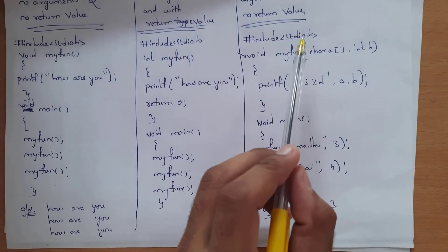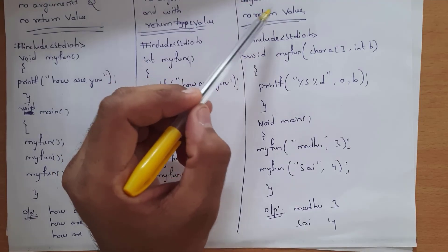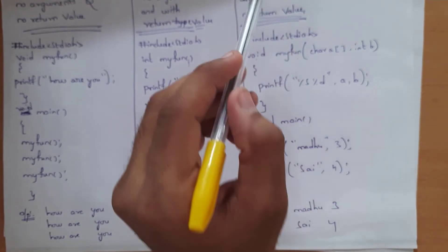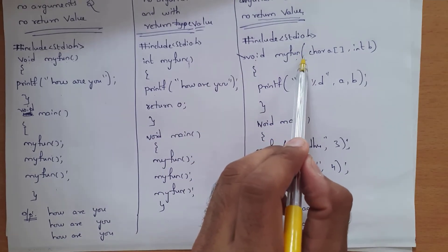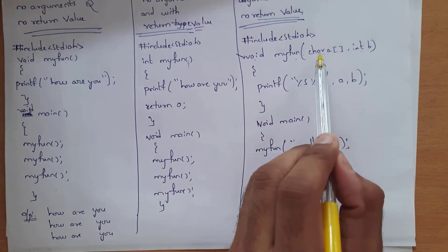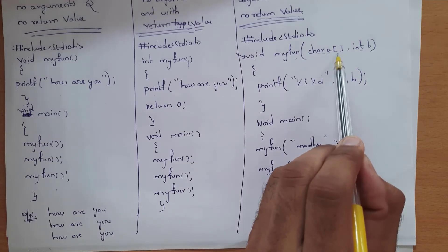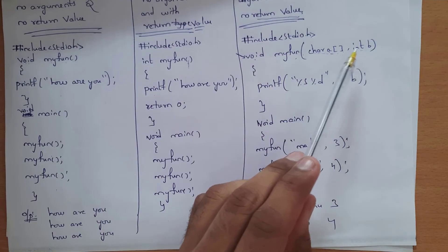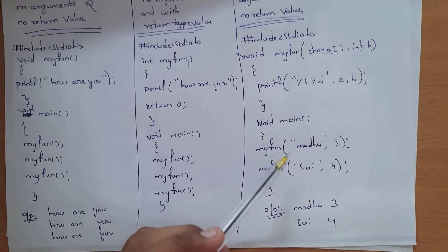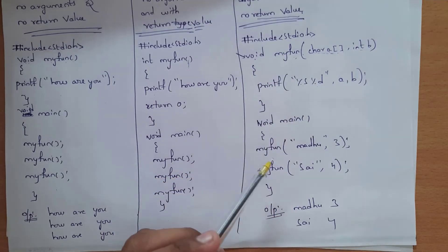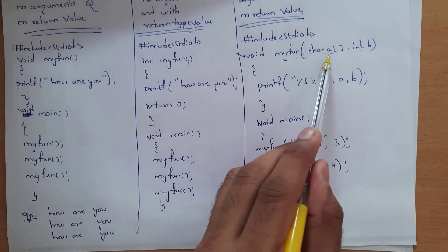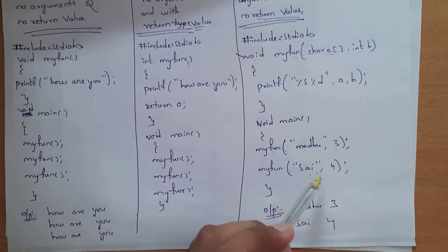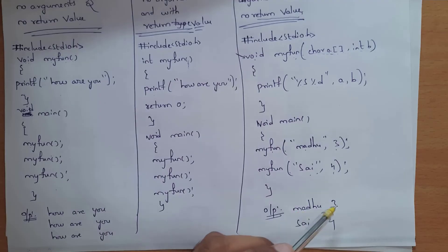For function with arguments and no return value, write hash include stdio.h, then void my_fun with arguments: character a with square brackets for a string, and int b for an integer. Inside write printf with %s and %d for a and b. In void main, call my_fun with 'madhu' and 3, and again with 'sai' and 4. Output will be: madhu 3 sai 4.